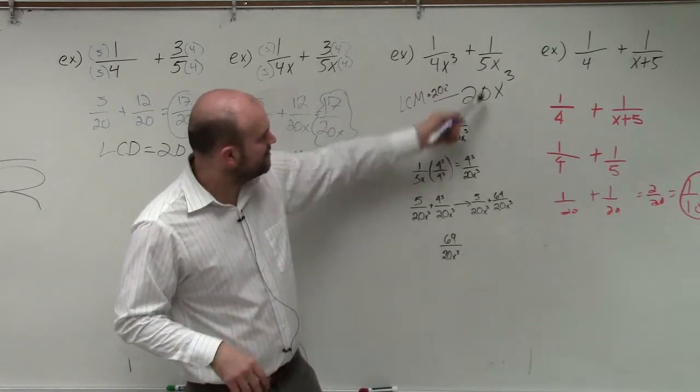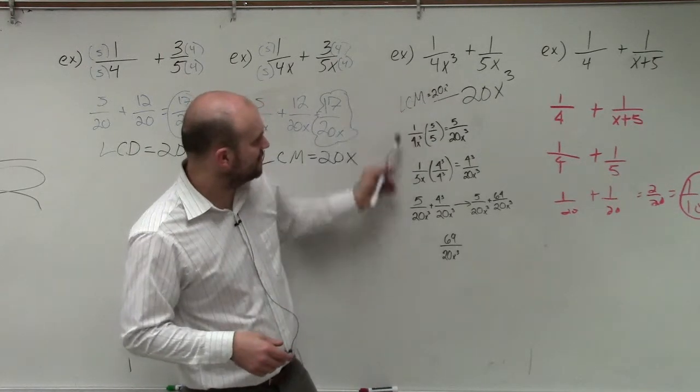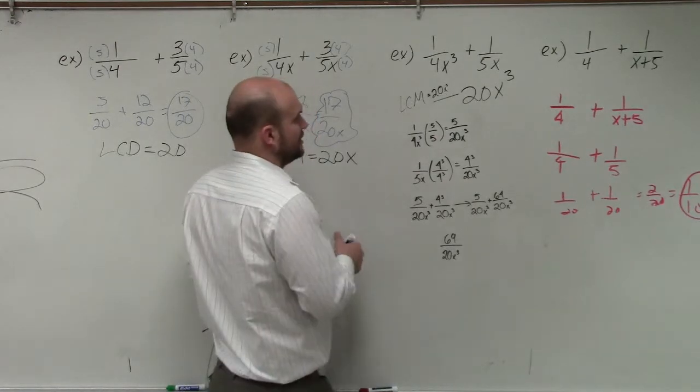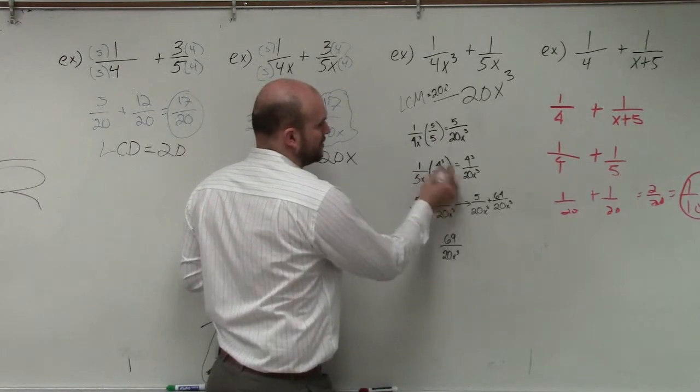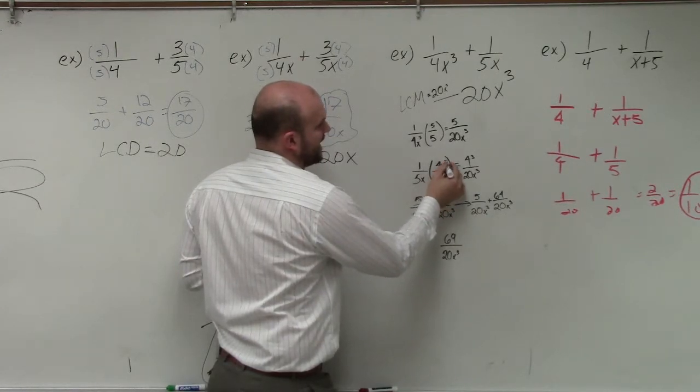So what they did is they multiplied this one by 5 over 5. And this one shouldn't have been 4 cubed. It should have been 4... 5 over 5. And this one should have been 4x squared.